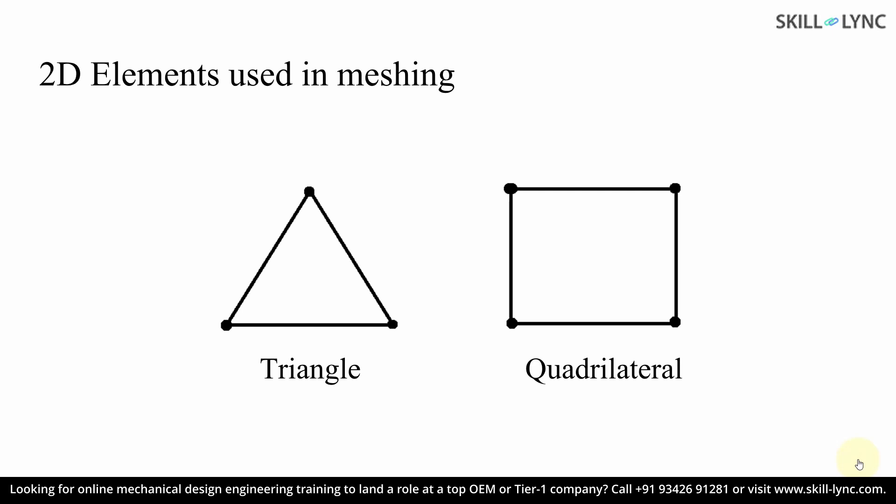SOLIDWORKS majorly uses two types of elements: triangular and quadrilateral. A basic triangular element has three nodes, and a basic quadrilateral element has four nodes. Any model used for finite element analysis will consist of intricate shapes and profiles that need to be captured even after discretizing. Hence, depending upon how complex your model is, your mesh needs to be refined. After performing any simulation, to check the accuracy of the results, we perform a grid dependency test — we run the same simulation by refining the mesh up to a point where the results do not change even after further refinement.